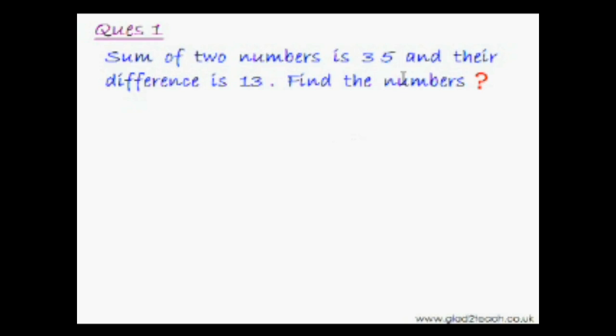Now we are doing word problems based on simultaneous equations. We are starting with a very simple question, so I am sure that you will be able to do it in no time. Sum of two numbers is 35 and their difference is 13. Find the numbers.